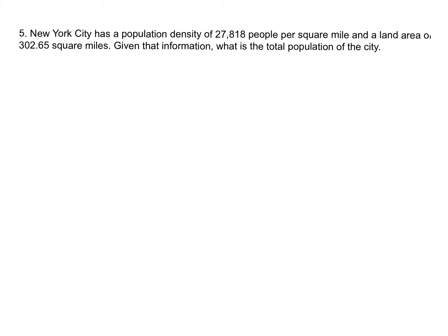Which brings us to our last example. Now I'm focused on New York City — a very populated city. It has a population density of 27,818 people per square mile, so a lot more than the city of Vineland. The land area is only 302.65 miles squared. Based on those figures, I want to figure out what is the total population of the city.